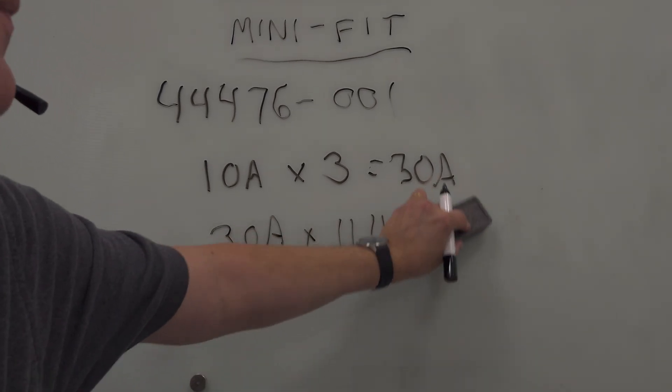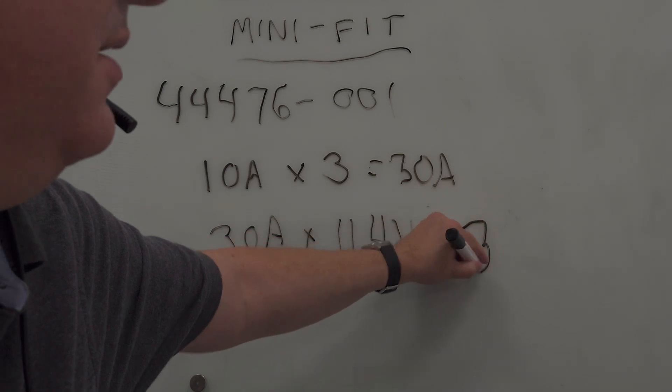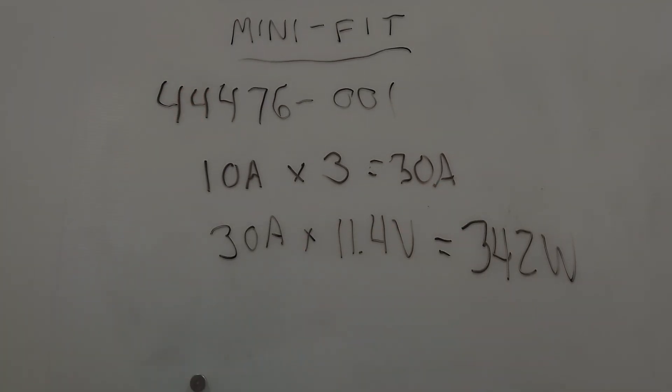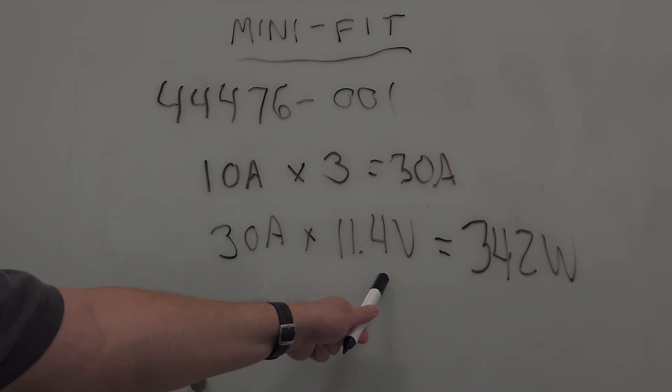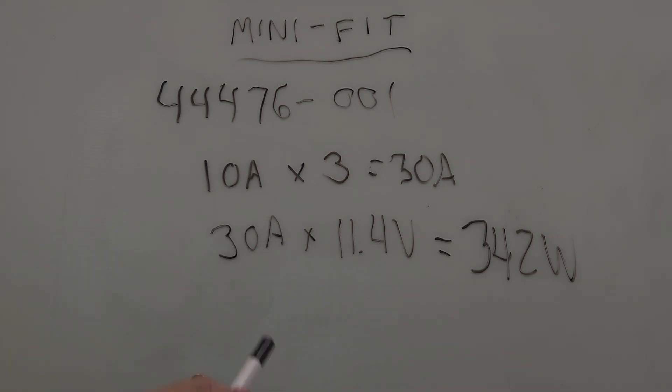So that's why we always use worst case scenario here. So we're using 11.4 volts, which means we're still within ATX spec and the maximum capability of the terminal. And that comes out to what? 342 watts. 30 times 11.4 is 342 watts. That is well within ATX spec. That is way more than 150 watts, right? No argument there. And honestly, are you really going to even try to put 30 amps? So yeah, we're talking about worst case scenario and we're also talking about maximum capability, but again, way more than 150 watts.